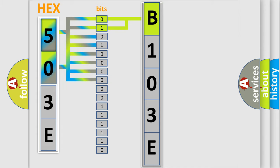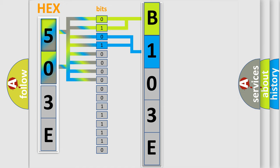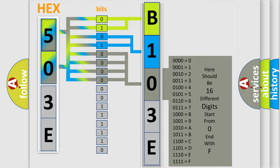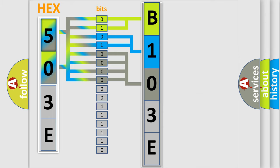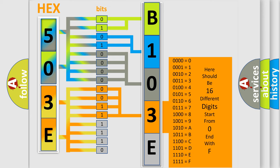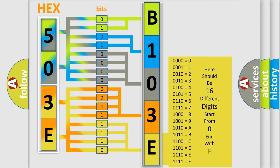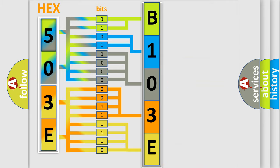The next two bits determine the second character. The last bit styles of the first byte define the third character of the code. The second byte is composed of a combination of eight bits. The first four bits determine the fourth character of the code, and the combination of the last four bits defines the fifth character. A single byte conceals 256 possible combinations.